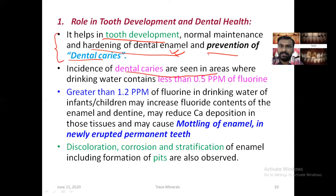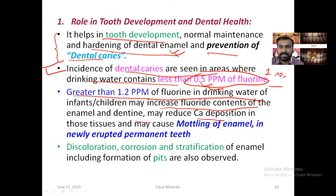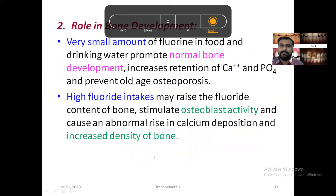Incidence of dental caries is seen in areas where drinking water contains less than 0.5 ppm of fluoride. The normal requirement is around 1 to 2 ppm. Greater than 1.2 ppm of fluoride in drinking water may increase the fluoride content of the enamel and dentine, reduce calcium deposition, and may cause mottling of the enamel and newly erupted permanent teeth — leading to discoloration, mottling, corrosion, and stratification of the enamel.